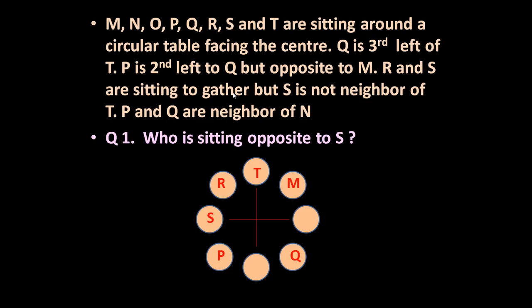Next: P and Q are neighbors of N. P is here, Q is here, so N will occupy the position between them. Now out of 8 persons, only one person is left and one space remains, so O will occupy that last position. All 8 positions are now filled based on the information given in the problem.